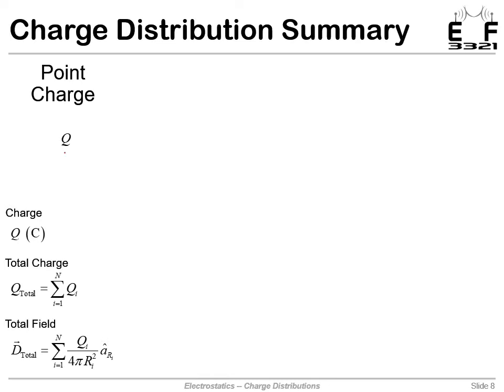So in summary, we have point charges that are described completely by just total charge. Since they're infinitely small, it does not make sense to talk about a charge density. And when there's multiple charges, we just add the effects of each of those charges individually.